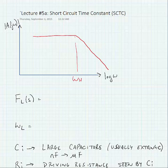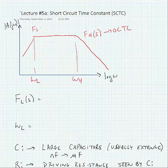And what we found was the omega-h, which was the pole frequency, and this is really a high-frequency shaping factor known as FH of S, and this is found using that OCTC method. Today we're going to find the low-frequency pole, which is our FL of S, our low-frequency shaping factor, and this is going to be found with this SCTC method.